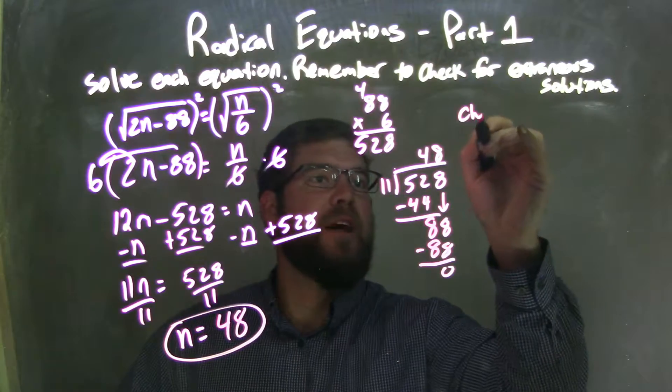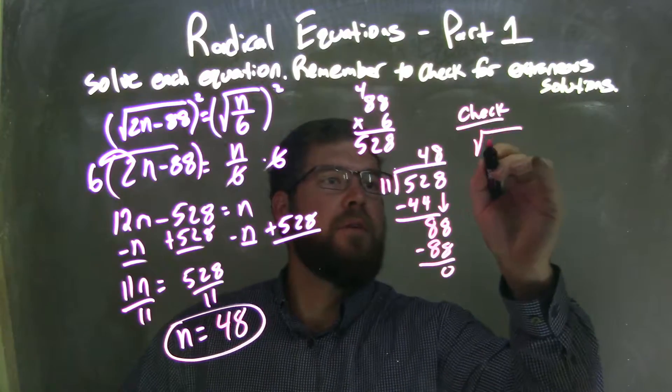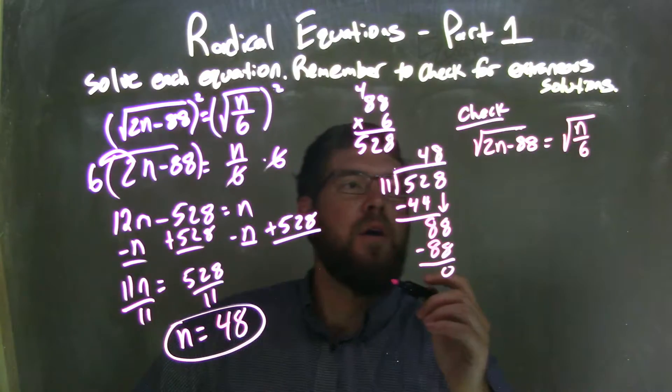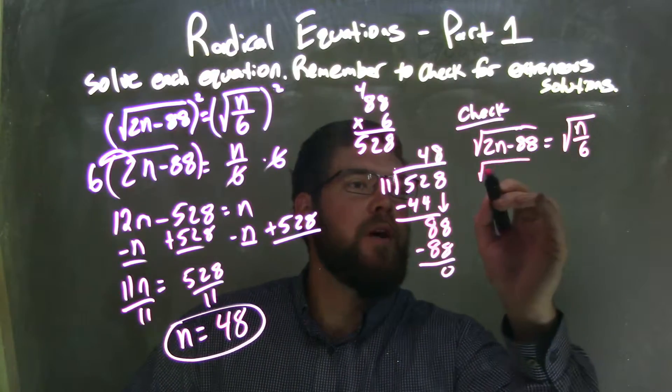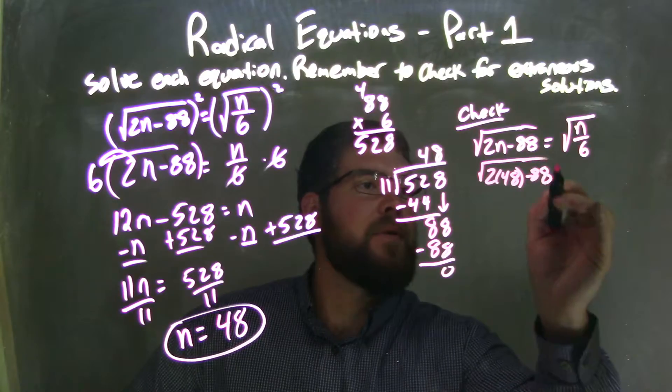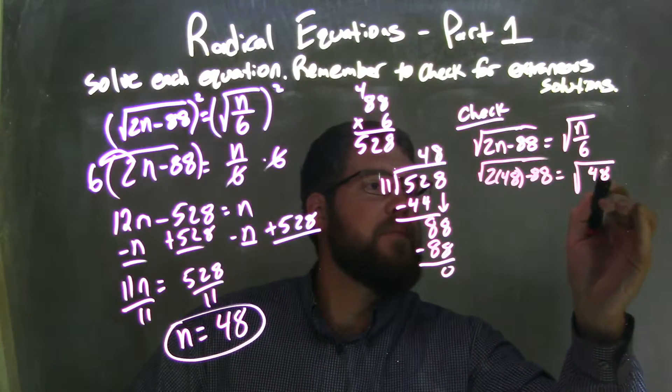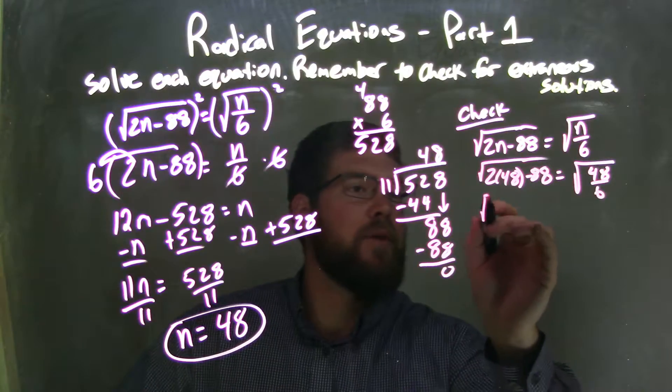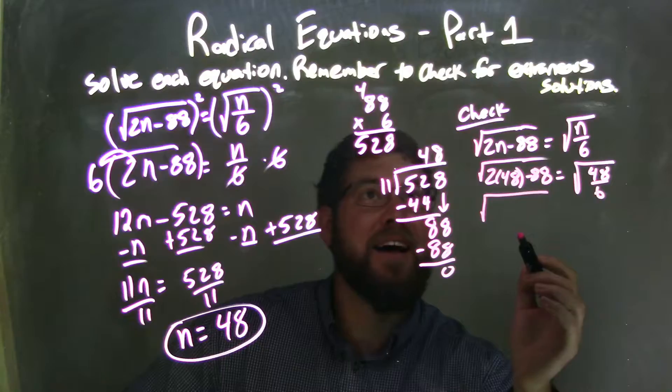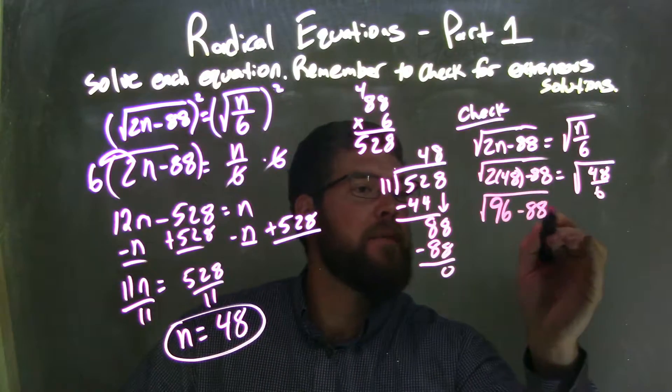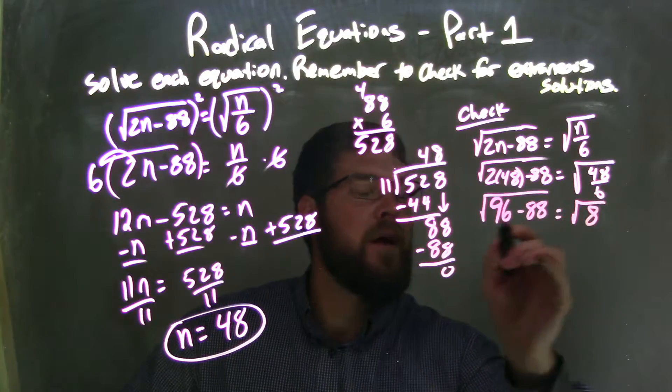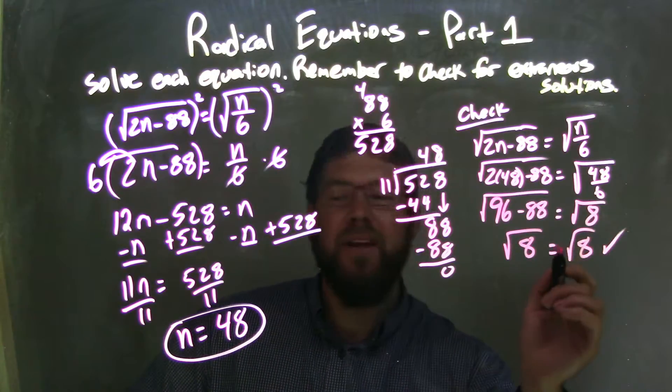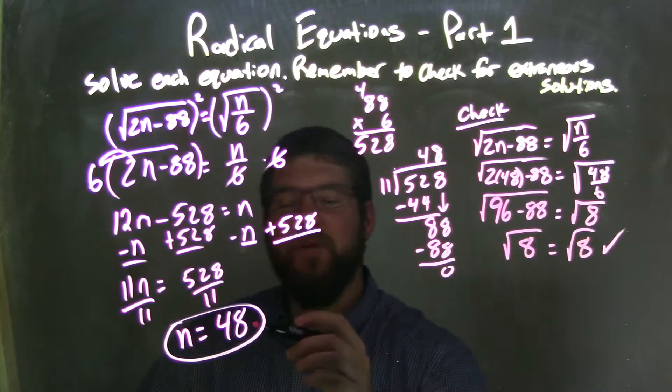But now I need to check. So, I'm going to rewrite my equation: square root of 2n minus 88 equals the square root of n over 6. Well, let's go plug in 48 in for n here. So, square root of 2 times 48 minus 88 equals square root of 48 over 6. Let's see. 2 times 48 is 96, right? 96 minus 88 equals the square root of 48 divided by 6 is 8. 96 minus 88 is 8. Square root of 8 does equal square root of 8. Check. We're good, right? So, fantastic. So, n equals 48 is my true answer.